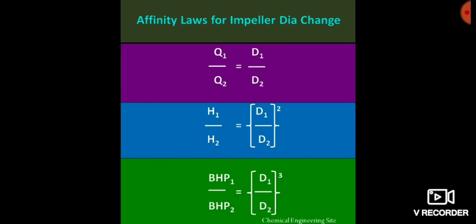The second one is the pressure relationship with the diameter of the impeller — it is a square relationship. If we increase the diameter of the impeller two times, then the pressure head increases by four times. The third one is BHP (brake horsepower): if we increase the diameter two times, then the brake horsepower will increase eight times.